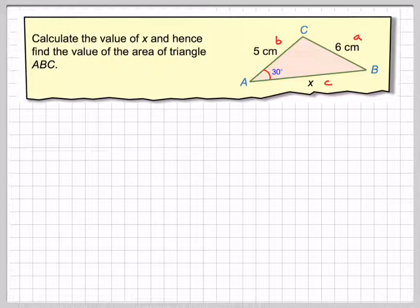So labelling my triangle ABC, so opposite A, opposite angle A, B, opposite angle B, and C, opposite angle C.